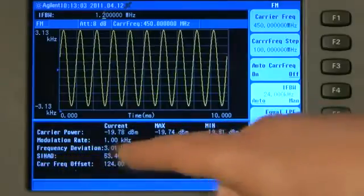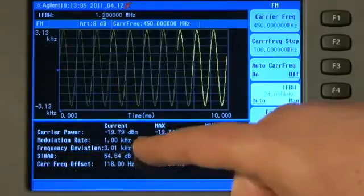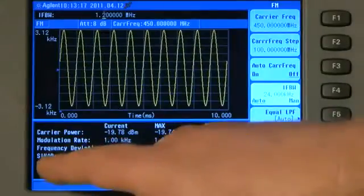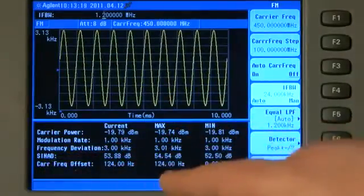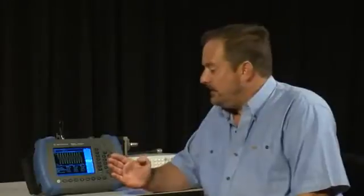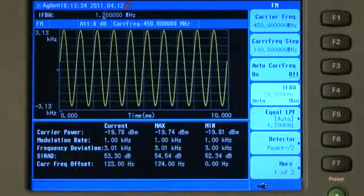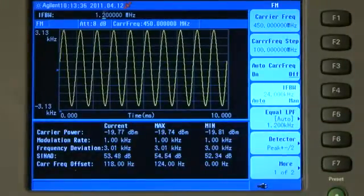It even measures the SINAD of the signal, currently 53 dB, because we have got a nice strong carrier. And it even tells us the carrier frequency offset. That is the error from the nominal carrier frequency of 450 MHz that the analyzer is measuring. So you can see the carrier frequency of this transmitter is about 120 Hz high.